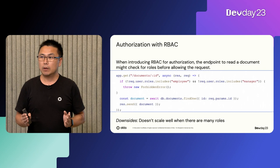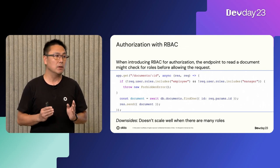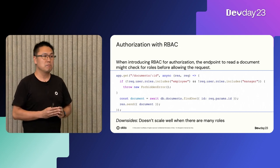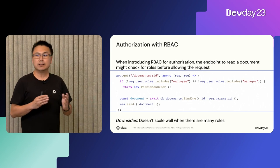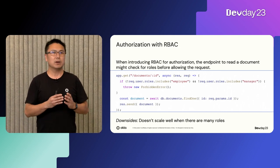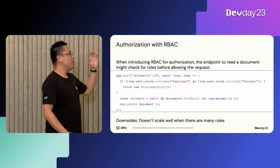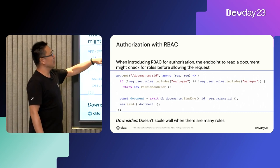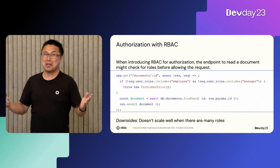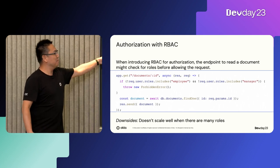However, RBAC does not scale well if you have many roles. Instead of just employee and manager, let's say you have developer, designer, QA, auditor, commenter, manager, and director. For every single role, you need to include it in this check, and you can see it does not scale well — you'd have a huge check.